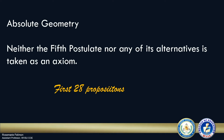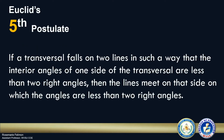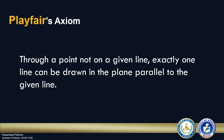Hence, we can use any of these 28 propositions to prove the equivalence of the 5th postulate and Playfair's Version. Let us recall the 5th postulate. It states: if a transversal falls on two lines in such a way that the interior angles on one side of the transversal are less than two right angles, then the lines meet on that side on which the angles are less than two right angles. We will show its equivalence to Playfair's Version, which states that through a point not on a given line, exactly one line can be drawn in the plane parallel to the given line.